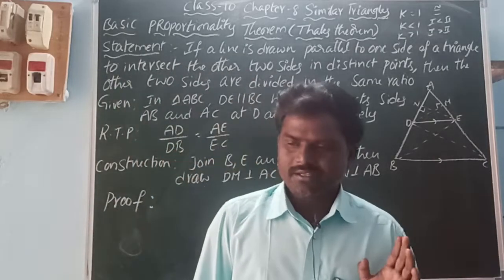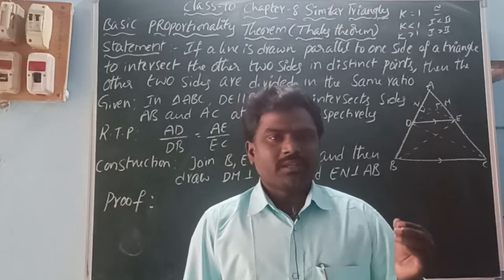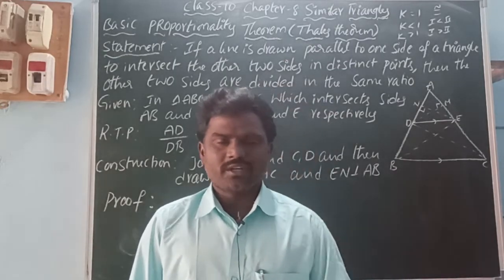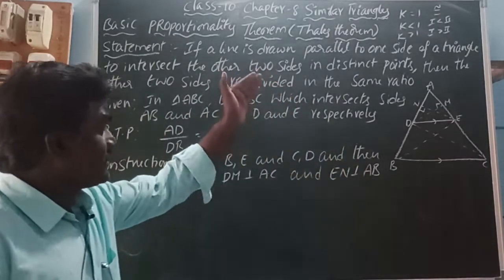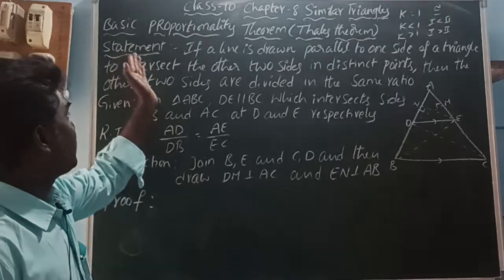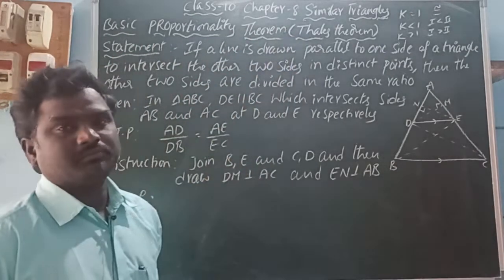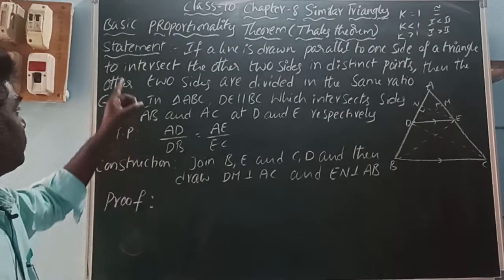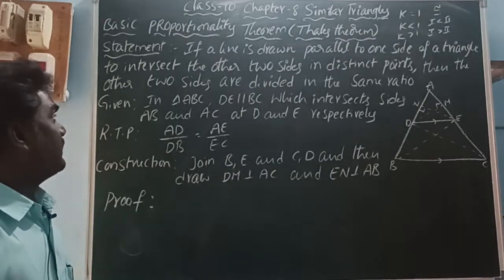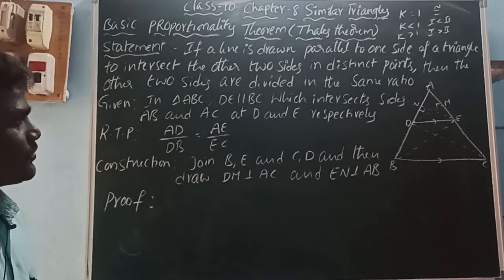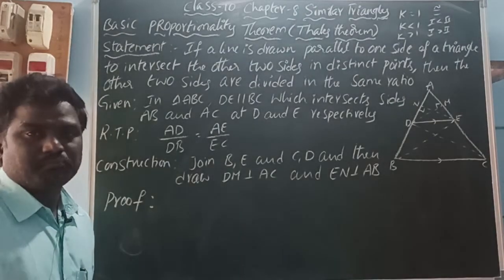Similar triangle means: in any two triangles, their shape is the same and size is different. The difference of the sides — how do you measure that? By taking the sides' ratios. In this chapter, I will explain the basic proportionality theorem, another name is Thales' theorem. The statement is: if a line is drawn parallel to one side of a triangle to intersect the other two sides in distinct points, then the other two sides are divided in the same ratio.